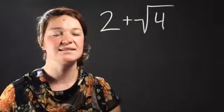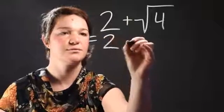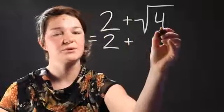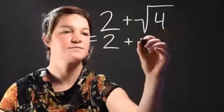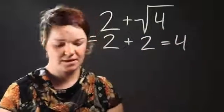Now, this is very easy to simplify. This is going to simplify to 2 plus the square root of 4 is 2. So, 2 plus 2 is 4. There you have it.